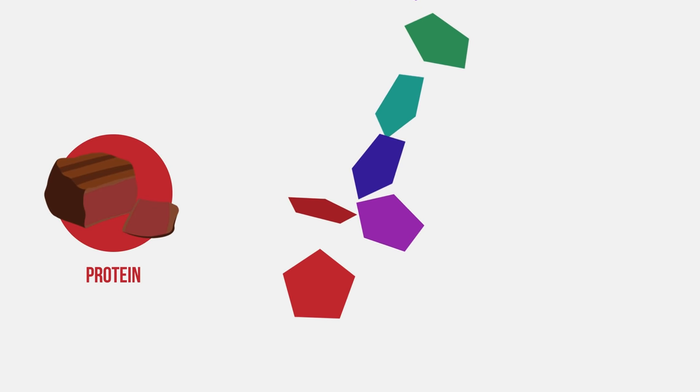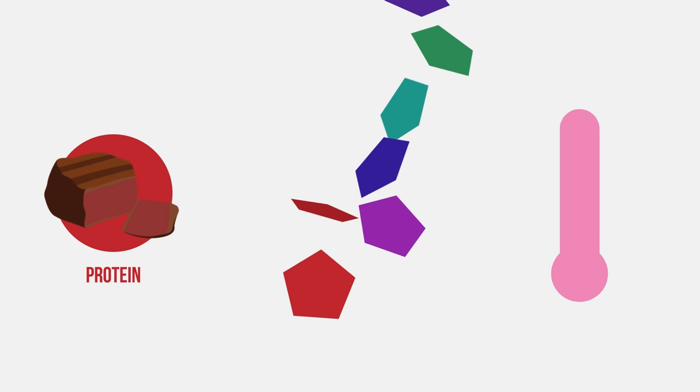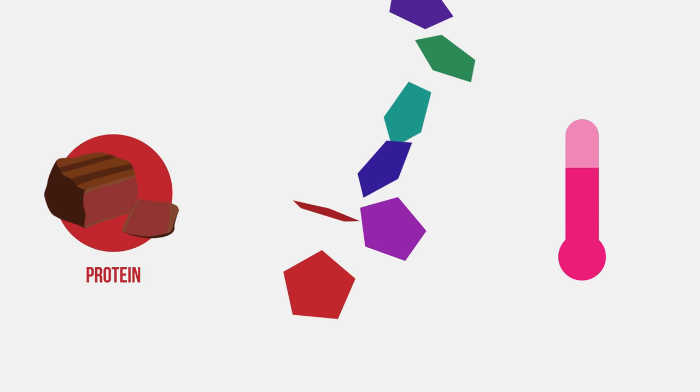Because enzymes are proteins and the bonds holding proteins together are weak, this is why enzymes denature above certain temperatures. The bonds are broken and the structure of the protein is changed.